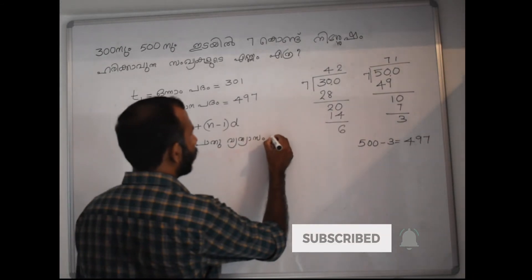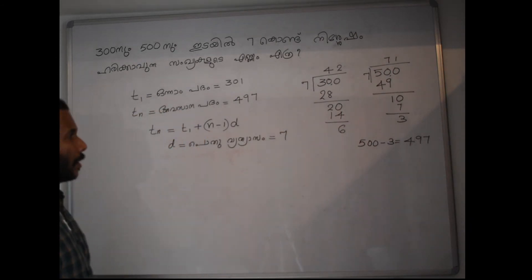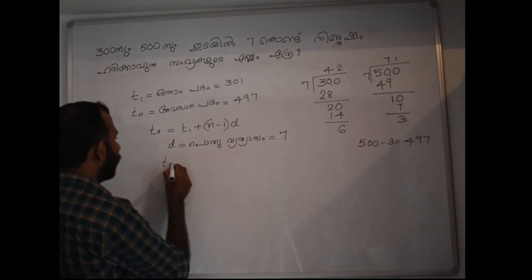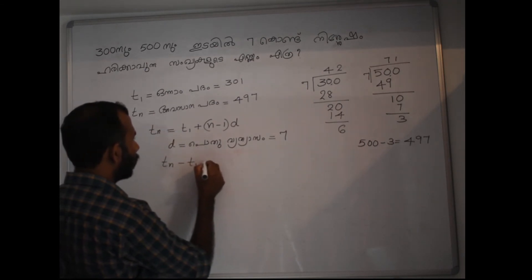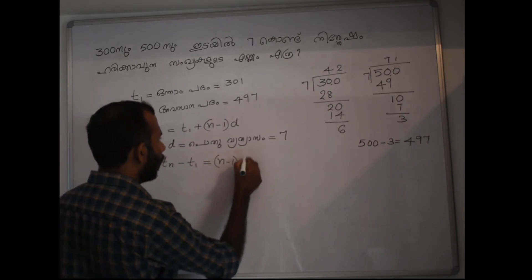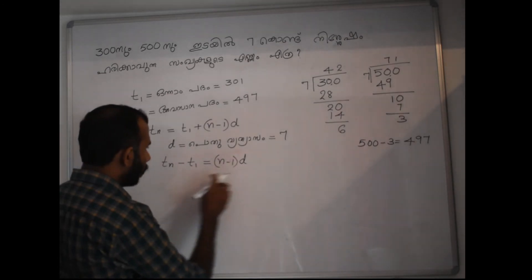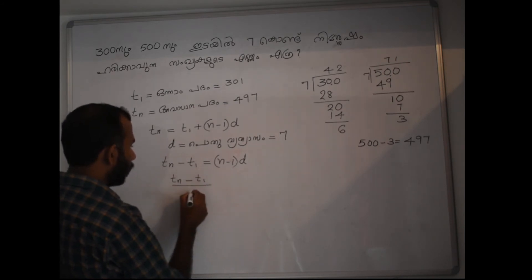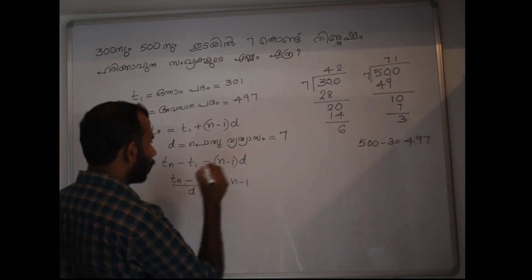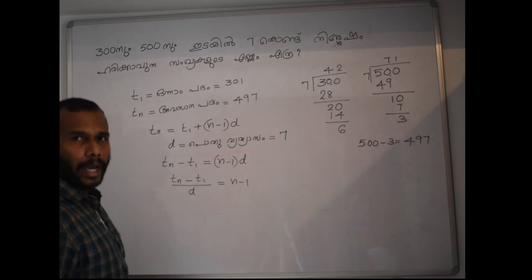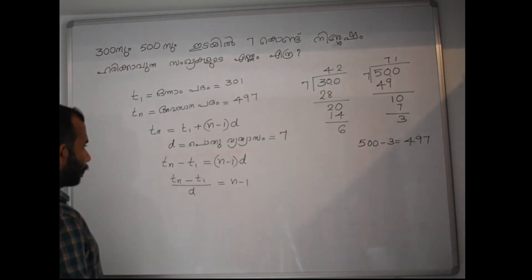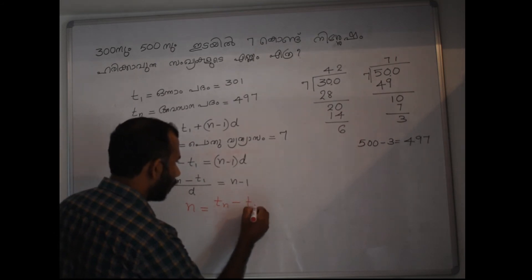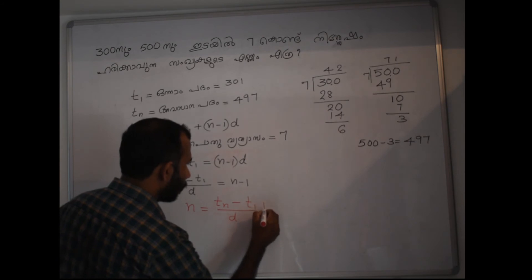The first step and the second step: next, we will take the formula of n. tn minus t1 divided by d equals n minus 1. Therefore, n equals tn minus t1 divided by d, plus 1.